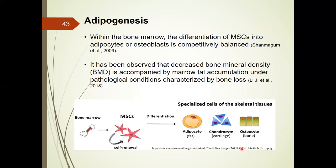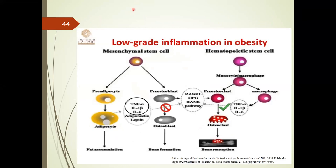Mesenchymal stem cells can be differentiated to adipocytes, chondrocytes, or osteoblasts. Previous studies demonstrate that adipogenesis can cause bone loss by decreasing bone mineral density. Mesenchymal stem cells shifted toward adipogenesis can induce lipid accumulation, inflammation, and then bone loss.